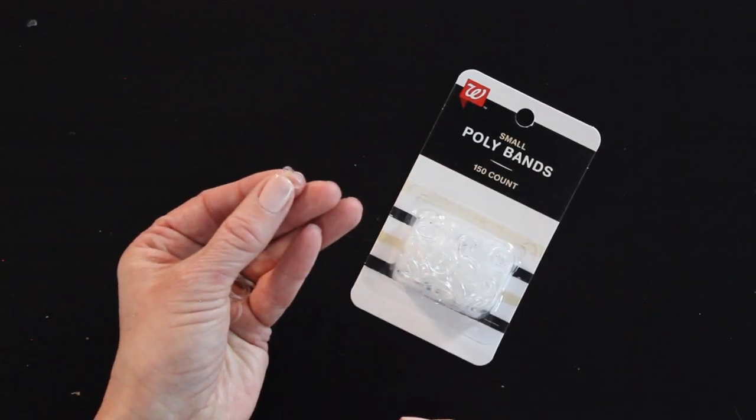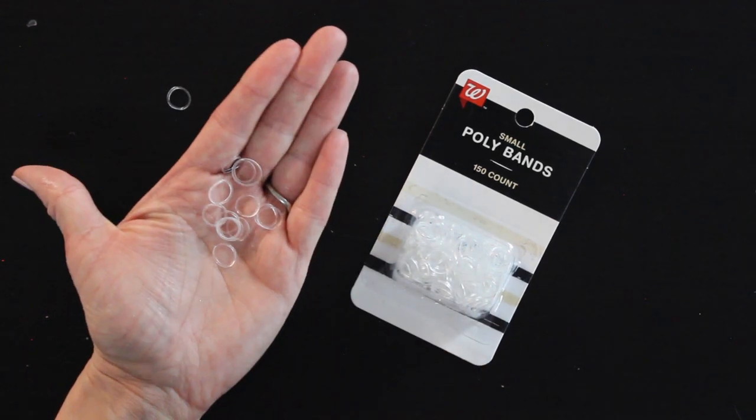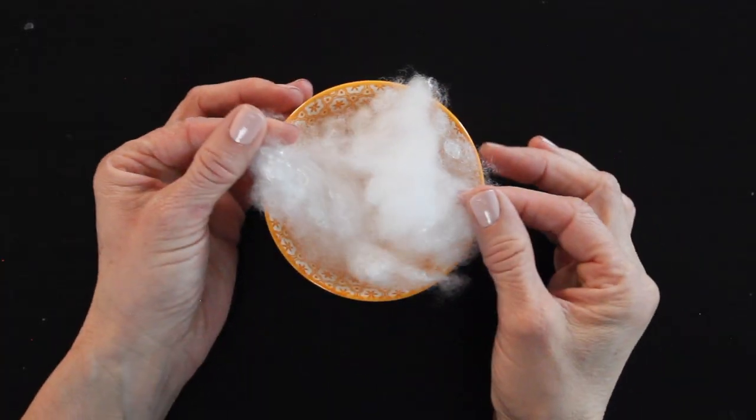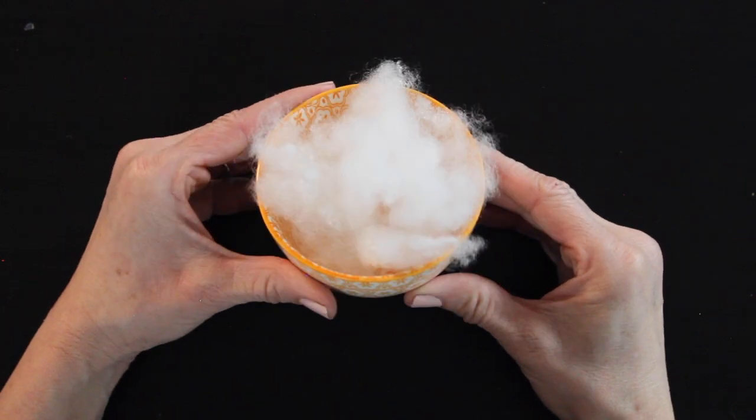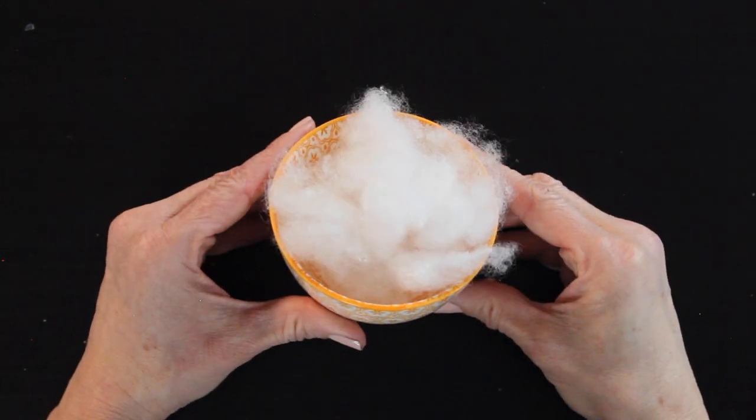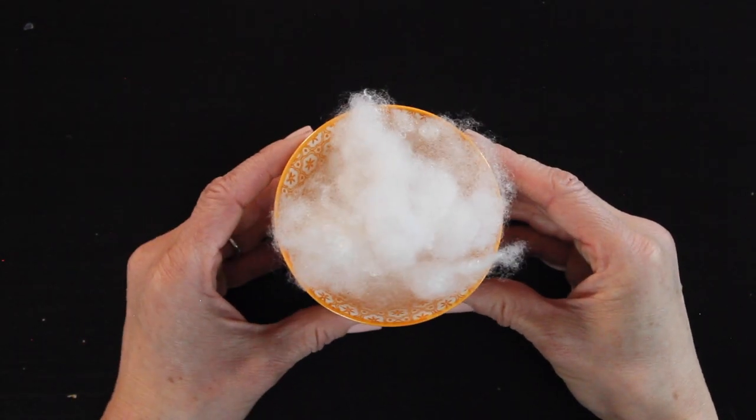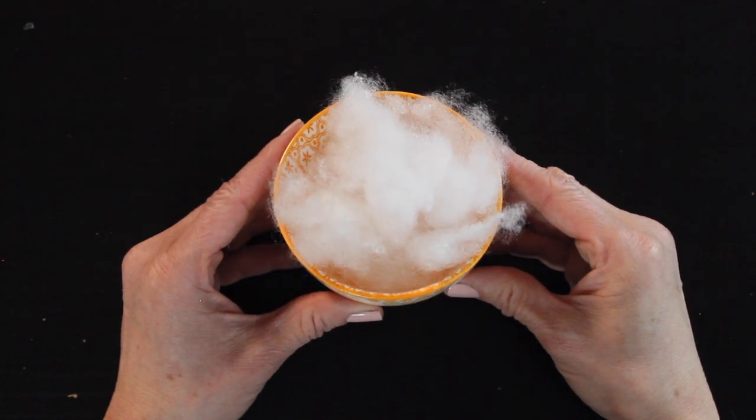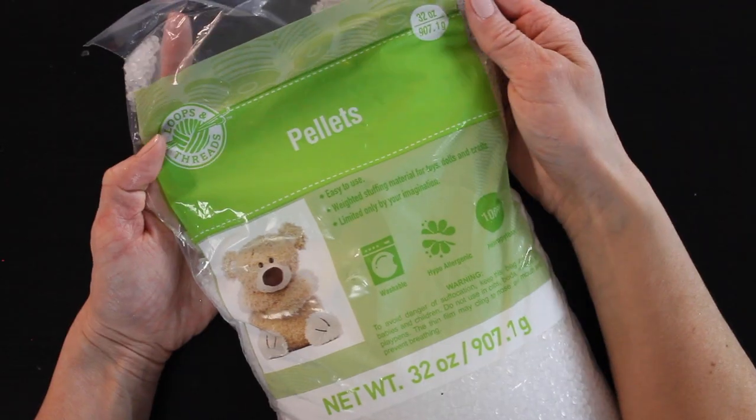I have some little tiny elastic bands. You can also use string or dental floss works well. I have some polyfill. I actually bought an inexpensive pillow and I've been using the inside of that to fill all of my gnomes so it's a really good way to save money.